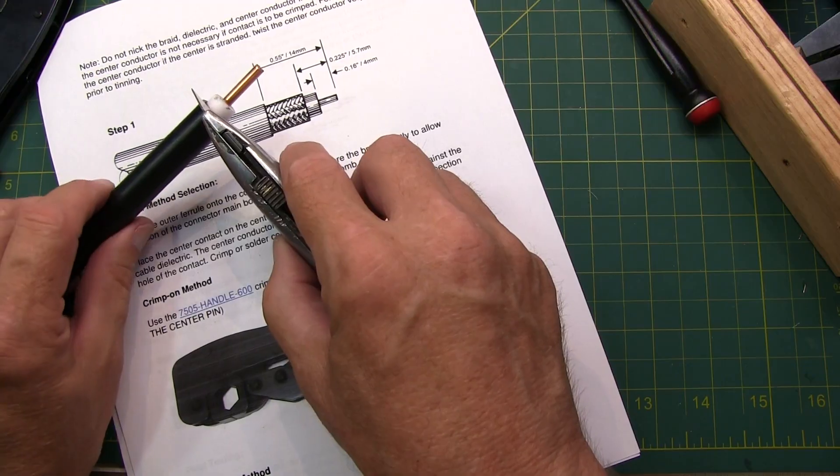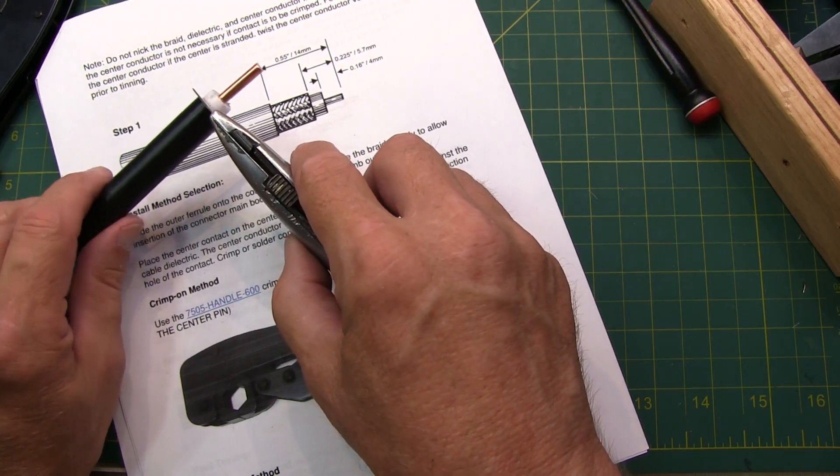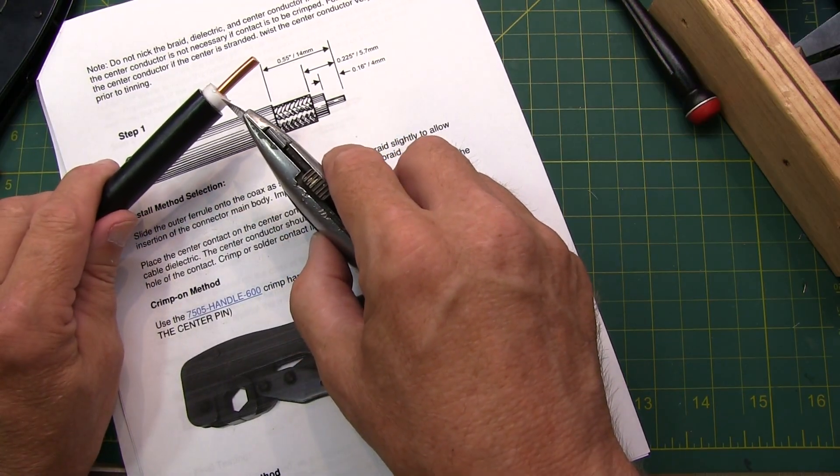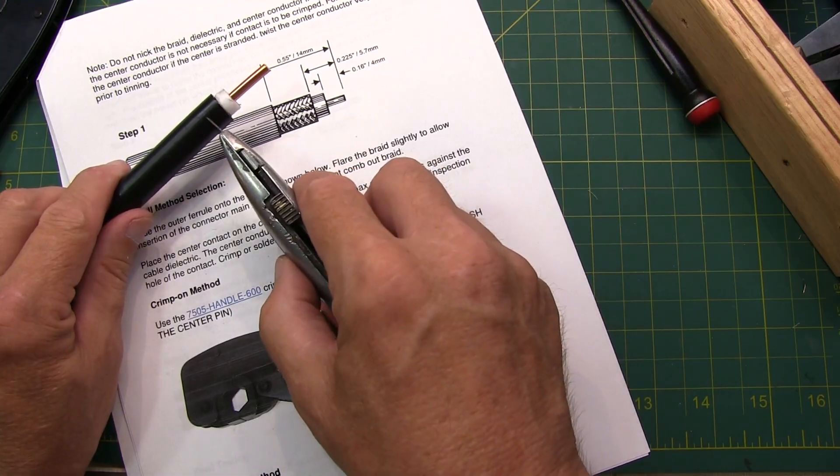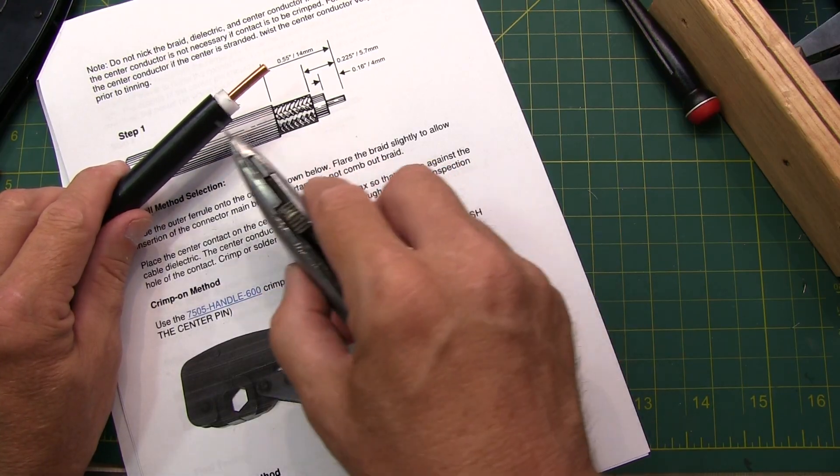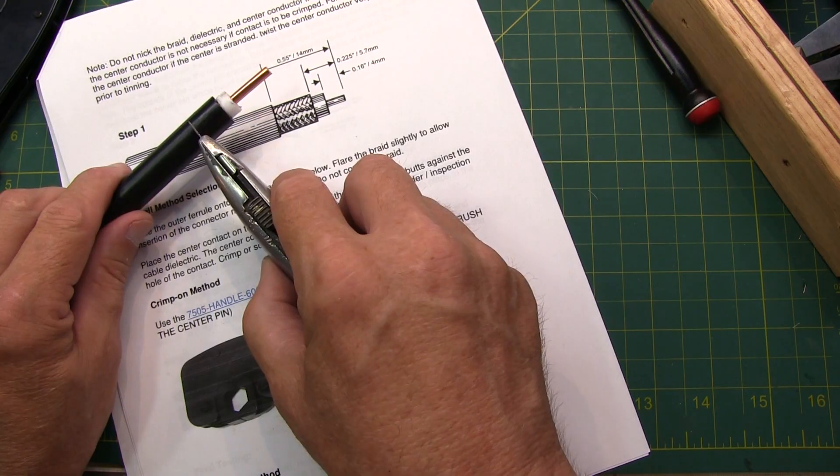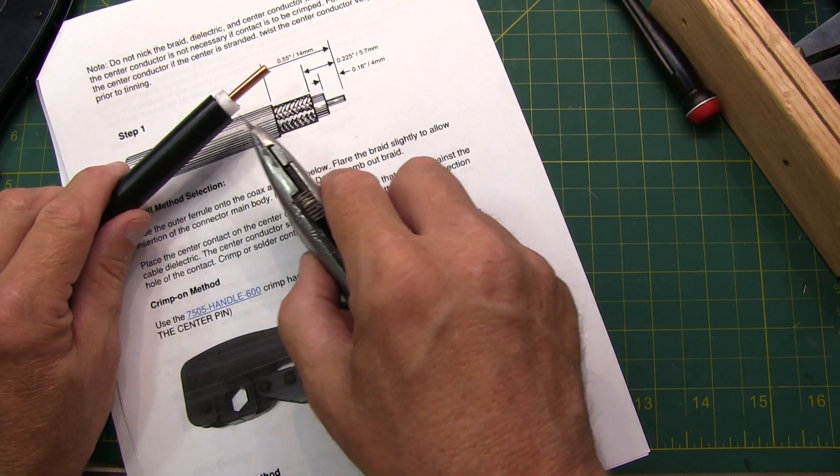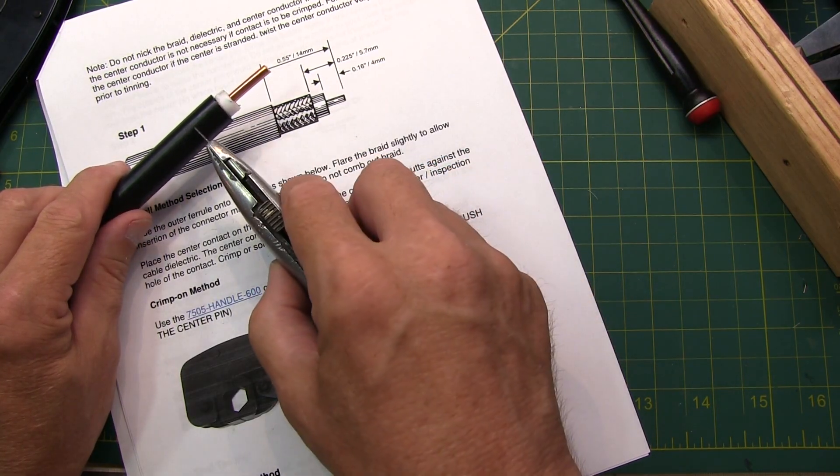Next, all we're going to do is trim back from here the right amount to expose the braid, and this makes it a lot easier to keep the braid in good shape when you're doing the stripping for this.